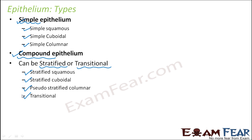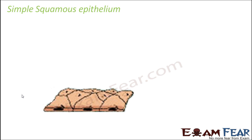Let us start with simple squamous epithelium. But first, let me clarify what is simple epithelium and what is compound epithelium. Whenever the term simple comes, that means there is a single layer of cells. Whatever the type or shape of the cells may be, there will be only one single layer. If there are more than one layer of cells, that is multiple layers, then it is called compound epithelium.